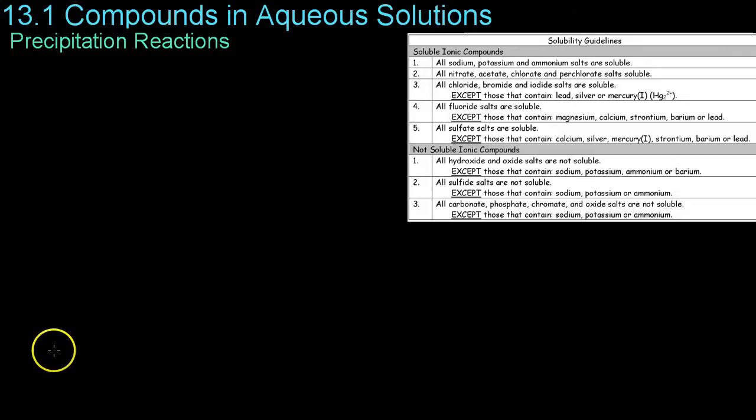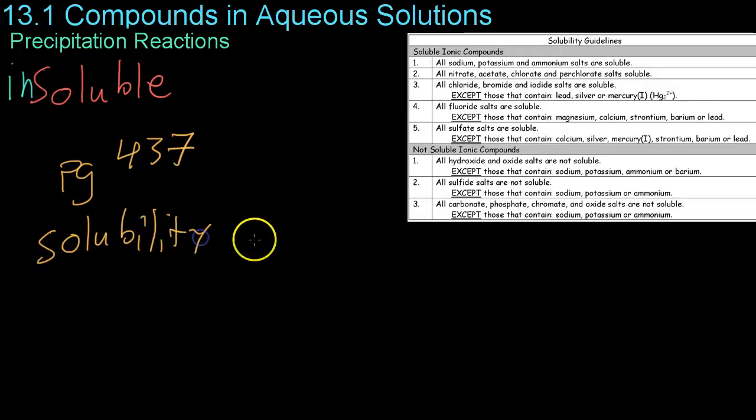So now we're going to be looking at precipitation reactions, which have a lot to do with whether or not something is soluble, usually in water, which is the solvent we use most commonly, or if it is insoluble. And to determine that, we often use a chart like what I have over here, or the one that's on page 437 of your book. For example, if we wanted to determine the solubility of sodium carbonate and see whether or not it would dissociate in water, we would have to look at a chart like this.